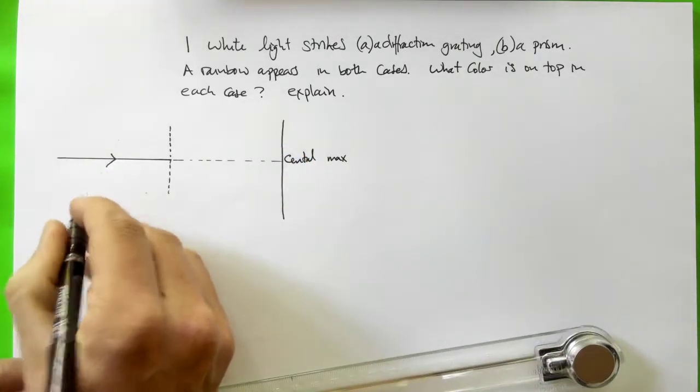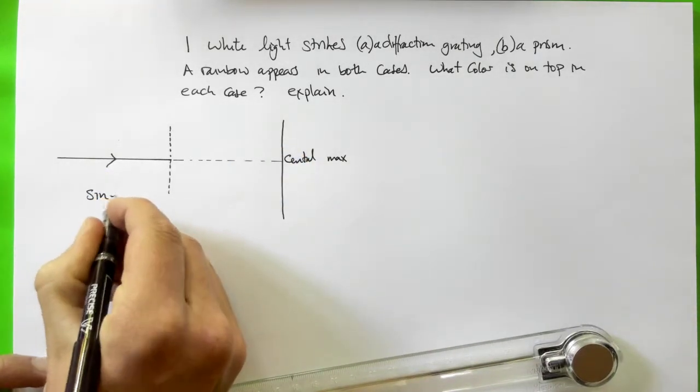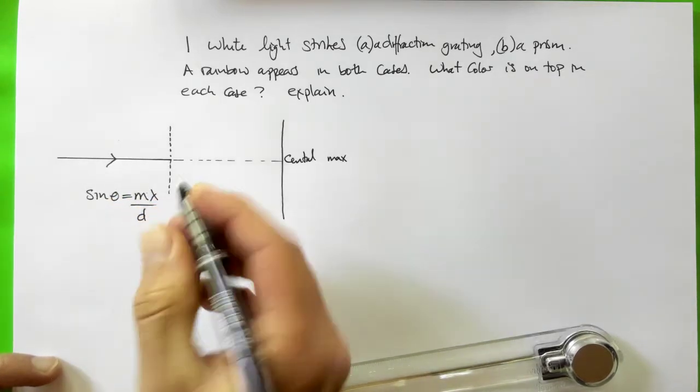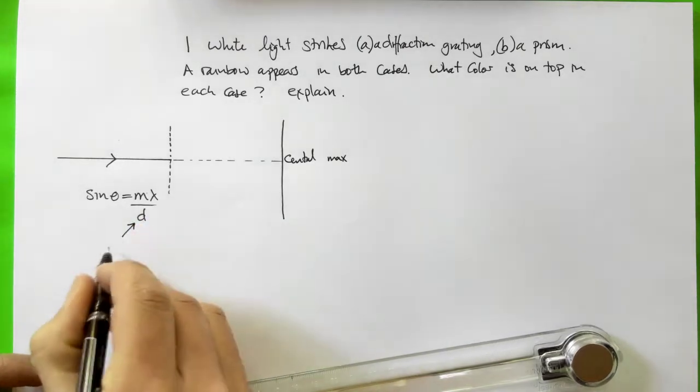And their positions are dictated by our diffraction equation: sin theta equals m lambda over d, where d is the slit spacing.